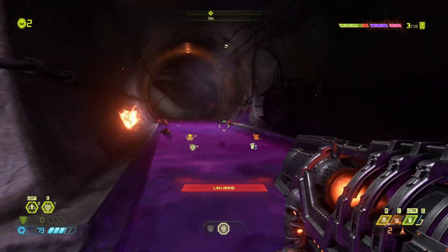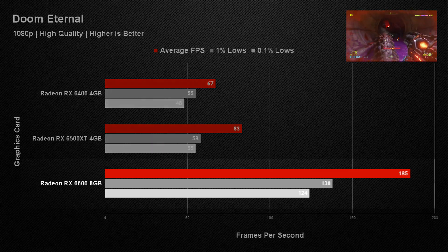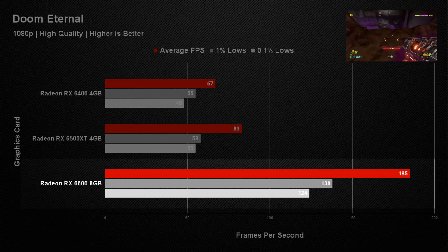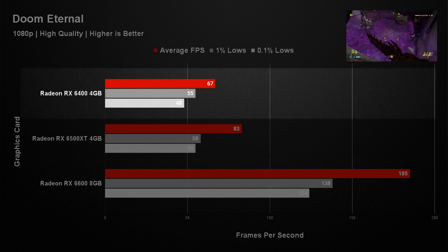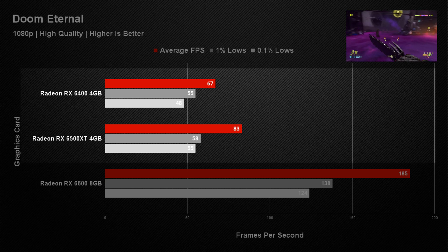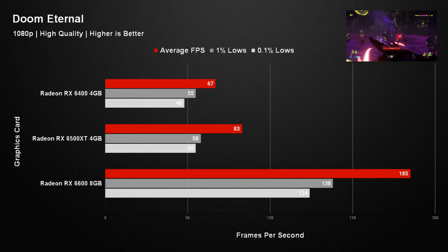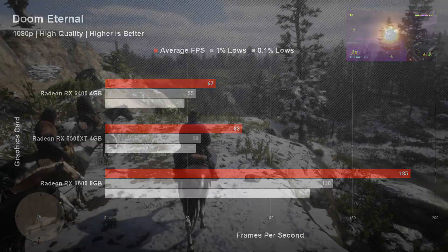Doom Eternal truly demonstrated the weaknesses of the two lower-end cards, with the RX 6600 pulling a massive lead at an average of 180 fps. The RX 6400 averaged 67 fps and the RX 6500 XT averaged 83 fps, which still meant the game was more than playable — so the price difference between the cards really needs to help justify the gap.